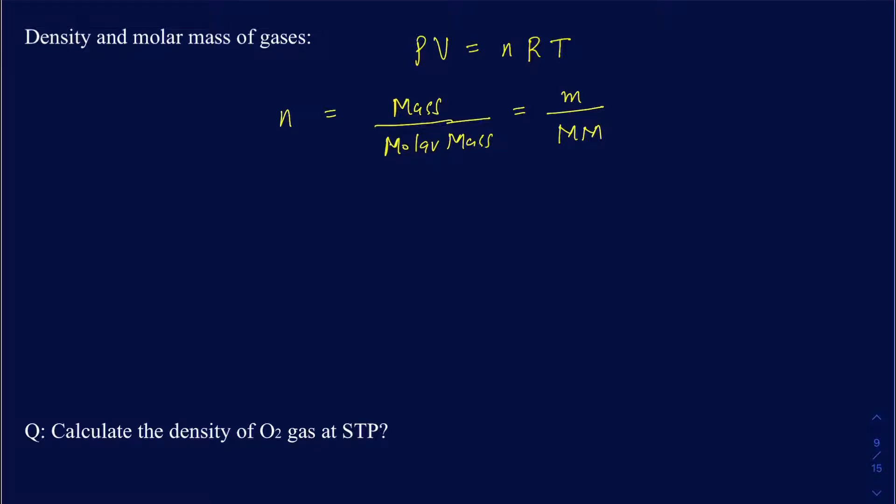Now, if I go back and plug that into that equation, it becomes PV equals the mass RT divided by the molar mass.